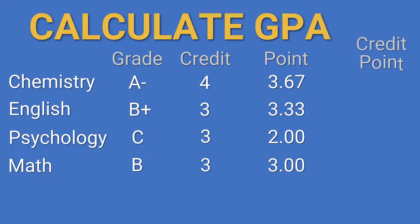To get the credit points, you multiply the credit hour with grade points. For Chemistry, it'll be 4 times 3.67 and that's 14.68. Do the same for English, 3 times 3.33 equals 9.99.